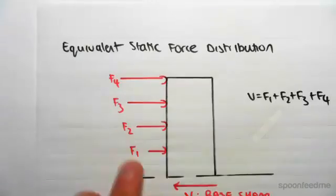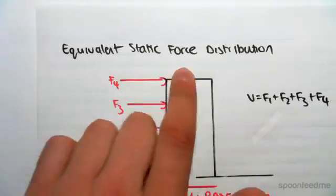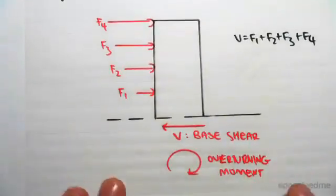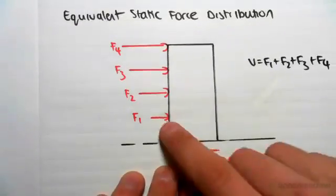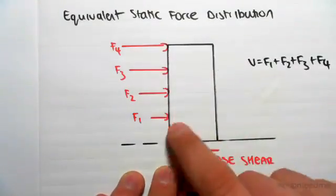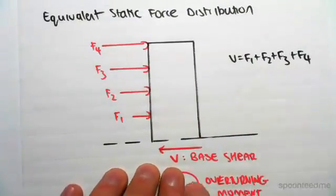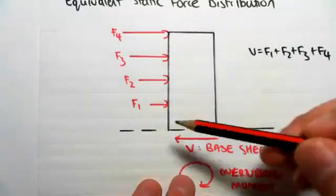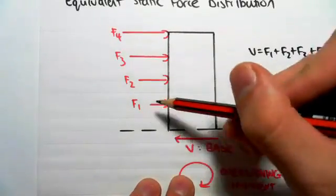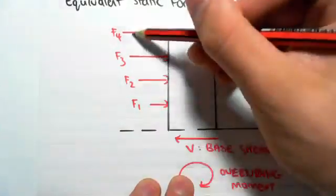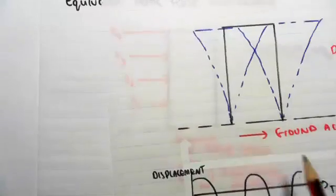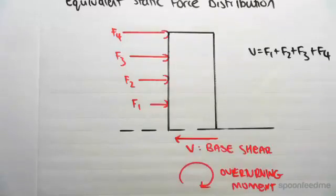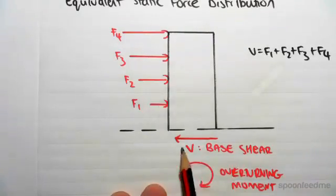And the way it does it is through this thing called the Equivalent Static Force Distribution. So what the code allows us to do is we work out this base shear and then we distribute this base shear up the structure like this, such that the sum of all the forces equals the base shear. And then based on these forces and their corresponding lever arms to the bottom, we can work out the moment that these forces cause. So the basic process is understanding the site and things like importance levels. We're then going to be able to work out the base shear.